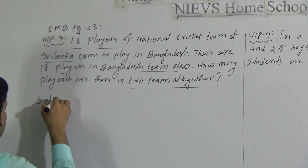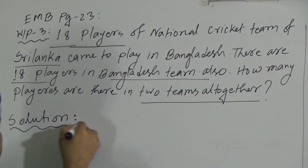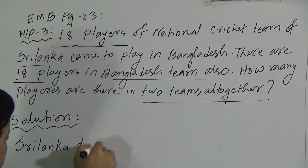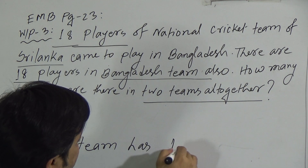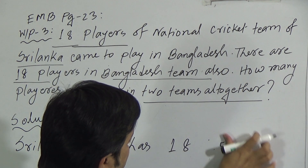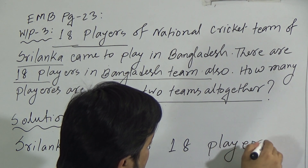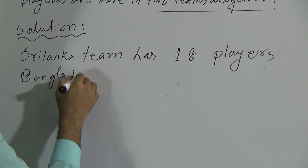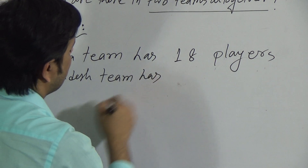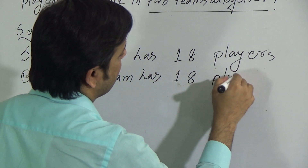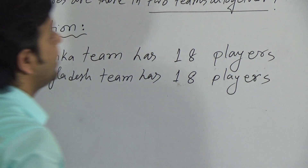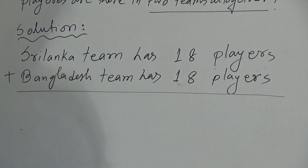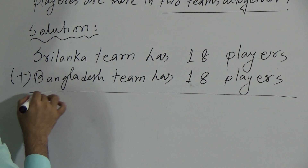See the solution. Sri Lanka team has 18 players and Bangladesh team has 18 players. Now if we do addition we will get the total number of players, so we can give the addition sign here. We write: therefore, for total.